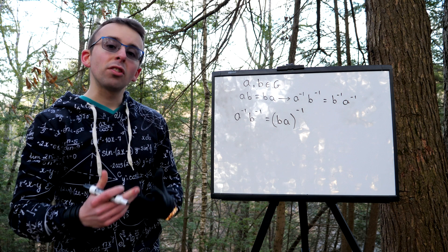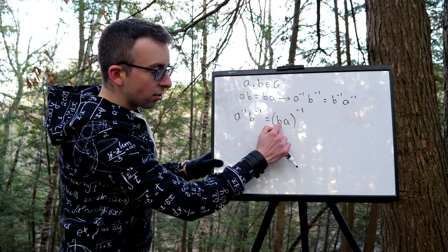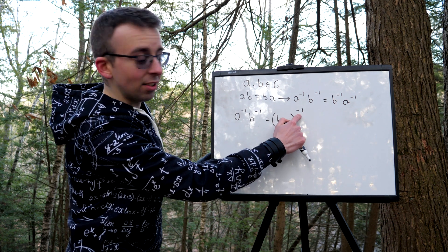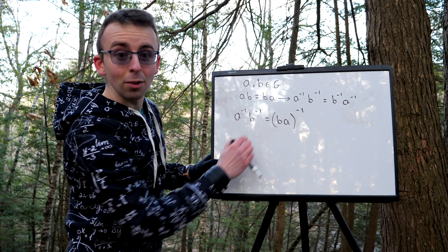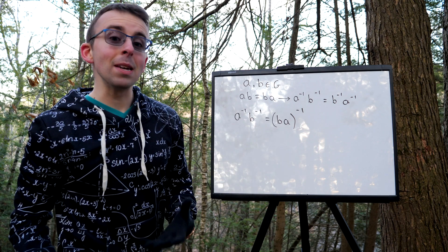This is often called the socks and shoes property. The idea is that if you put on your socks and then your shoes, and then you want to take them off, which is the inverse, you've got to first take off your shoes, and then you've got to take off your socks. So ba inverse is a inverse b inverse.